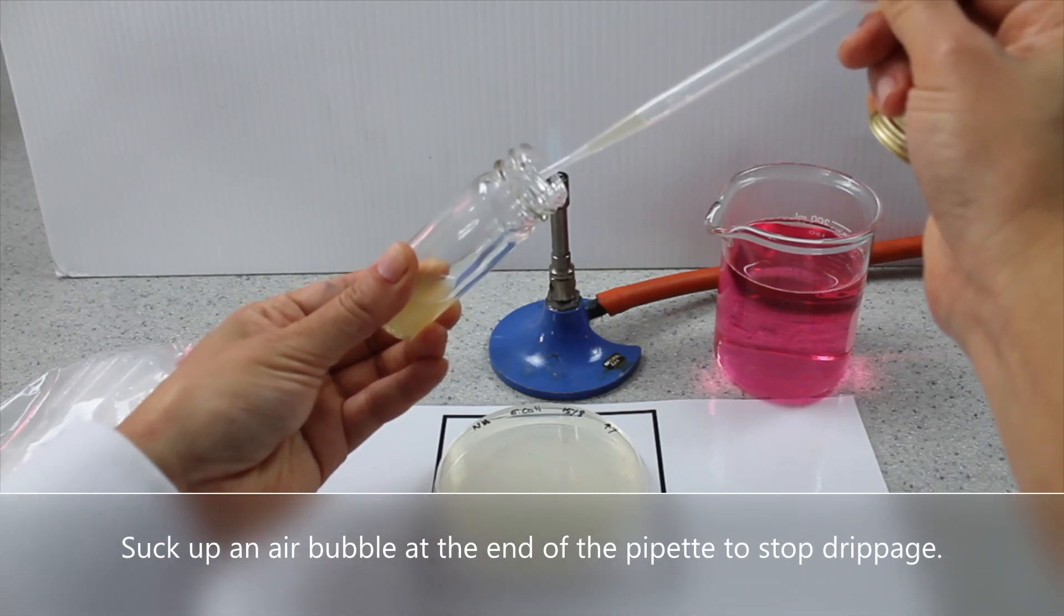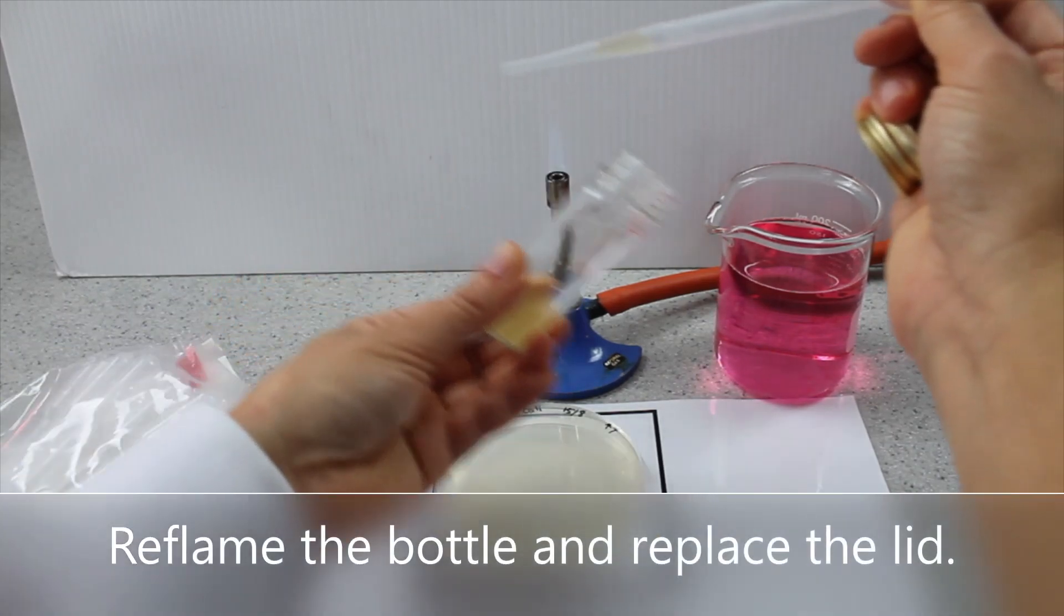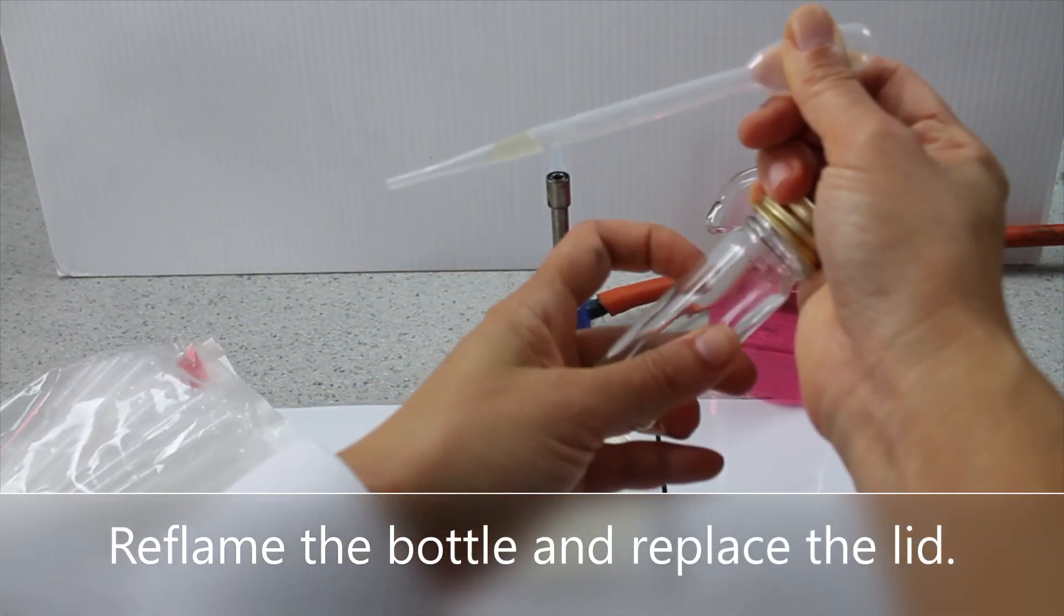Suck up an air bubble at the end of the pipette to stop drippages. Re-flame the bottle and replace the lid.